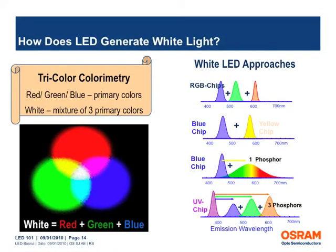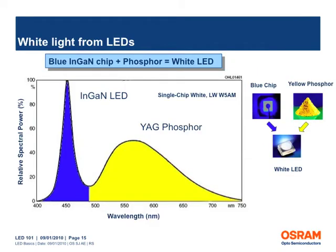Apart from monochromatic LEDs, white LEDs are used in a number of applications. One approach to generating white light utilizes a combination of three primary colors: red, green and blue LEDs. Another approach is to use blue and yellow LED chips together in a certain ratio to produce white light. A third approach is to use a blue chip and a yellow phosphor to generate white light, or by utilizing an ultraviolet LED to excite red, green and blue phosphors. The most widely used approach to create a white LED is to use a blue LED chip combined with a phosphor.